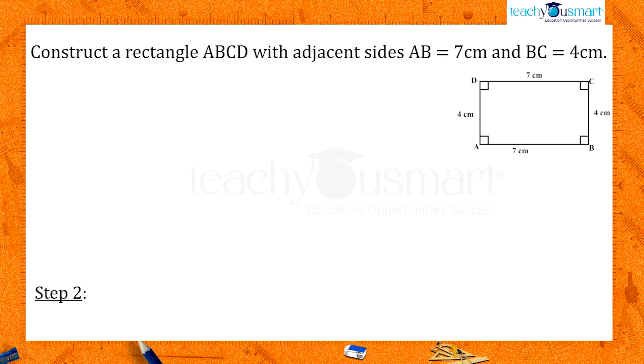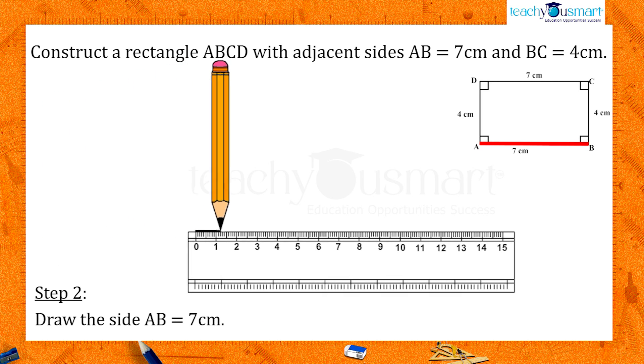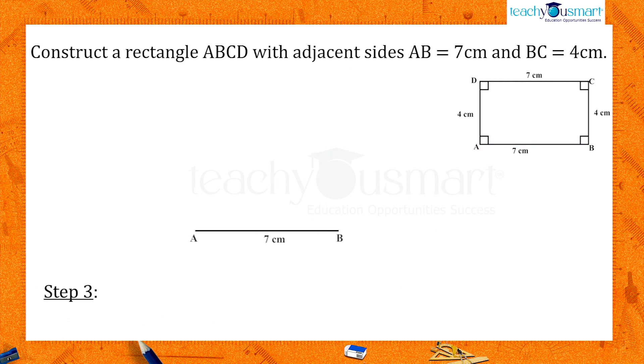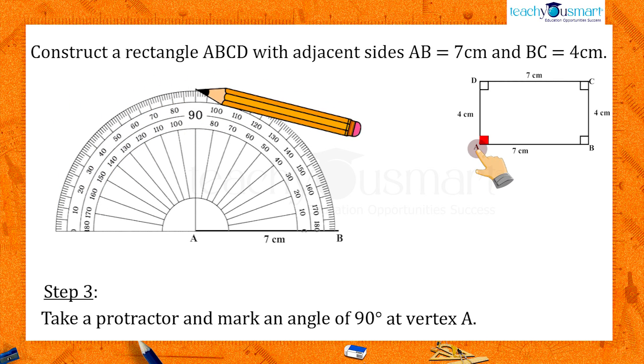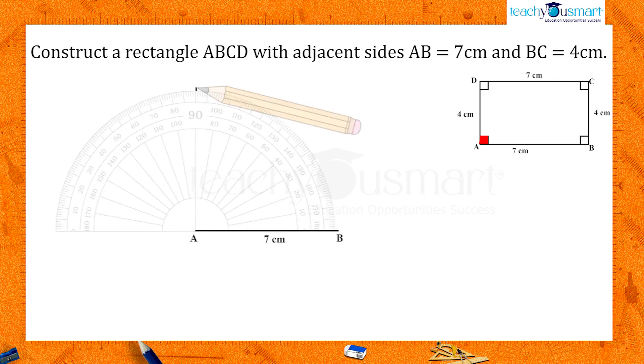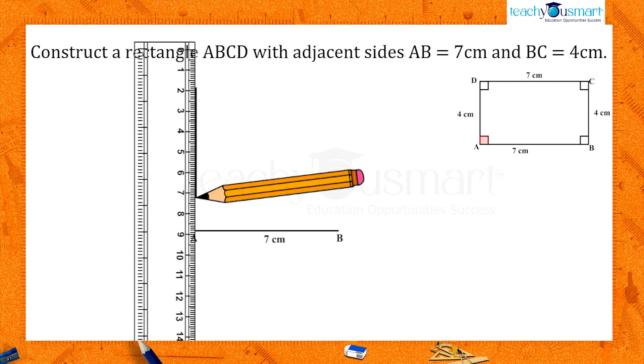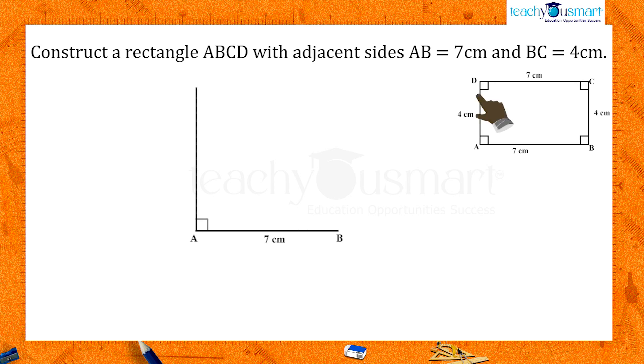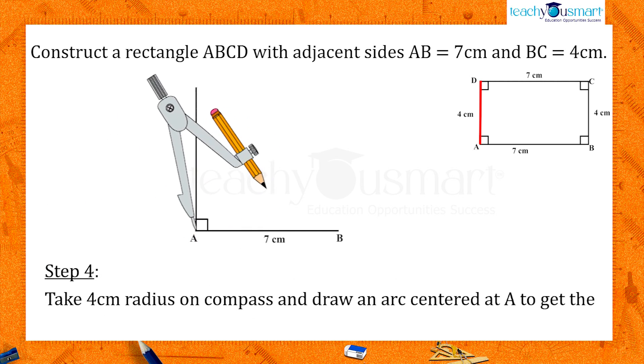Now let's begin the construction with the side AB. Draw the side AB equals 7 cm. Take a protractor and make an angle of 90 degrees at vertex A. The point D is at a distance of 4 cm from A on this ray. So take a 4 cm radius on the compass and draw an arc centered at A to get the point D.